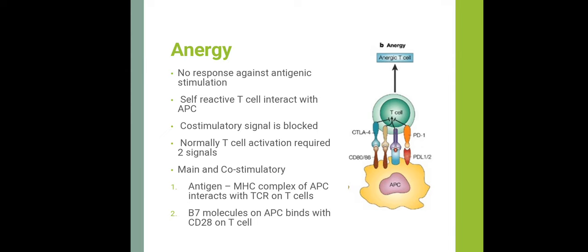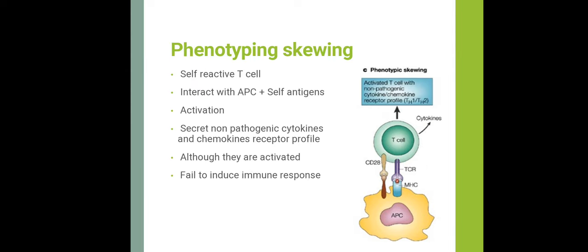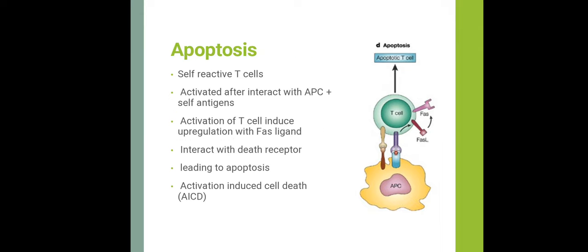In phenotypic skewing, the self-reactive T-cell interacts with antigen presenting cells presenting self-antigens and undergoes full activation, but secretes non-pathogenic cytokines and a non-pathogenic chemokine receptor profile. Although activated, it fails to induce autoimmune responses.